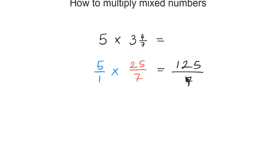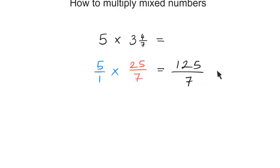I could convert this into a mixed number, but it's not necessary. I can leave it in fractional form as long as the improper fraction has been simplified, meaning I cannot divide it any further. But suppose I wanted to convert my answer into a mixed number — all I need to do is see how many 7s go into 125, and I can just use long division, the bus stop method.